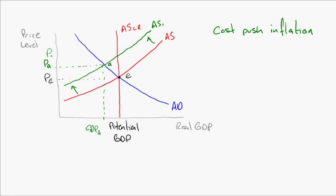If governments increase demand, we end up at a price level like PC — higher prices and no better off than before. The alternative is to do nothing. We know that in the short run we go to point A, but as price levels rise and wage contracts are renegotiated at lower wages, the aggregate supply curve will shift back right and we'll return to equilibrium. However, this shift could take quite a while before wages drop enough, meaning extended periods of unemployment — so it's a bit of a policy dilemma.